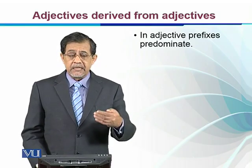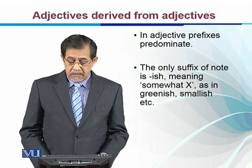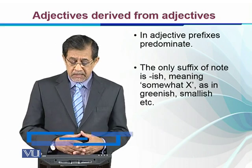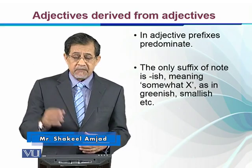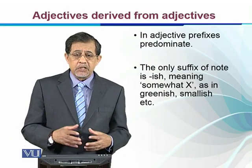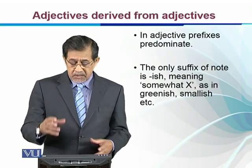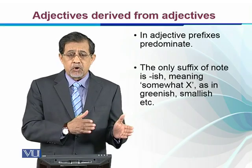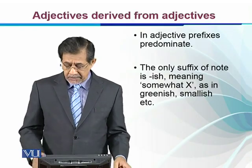We add a prefix with an adjective to get another type of adjective with another meaning. The only suffix of note is -ish, that comes at the end. For example, 'somewhat x' — green is an adjective and we add -ish to make it 'greenish,' or 'smallish,' meaning somewhat small or somewhat green. Otherwise, generally, it is the prefix that is more common with adjectives to derive adjectives from adjectives.